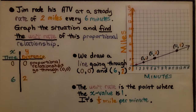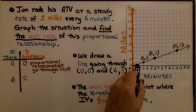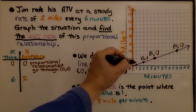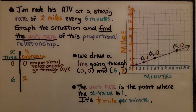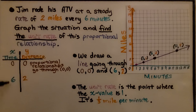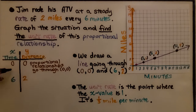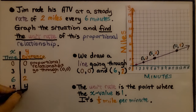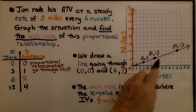The unit rate is the point where the x value is one, and we can see that it's not half — it's below half — it's one third. It's one third mile per minute. If he goes two miles every six minutes, that means he goes one mile every three minutes, which is one third mile per minute. We can continue the table with more ordered pairs: cutting six and two in half gives us (3, 1), and doubling gives us (12, 4). You can see the line goes through those grid line intersections.